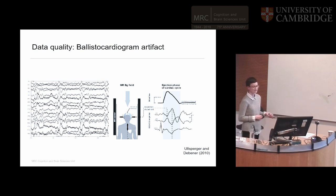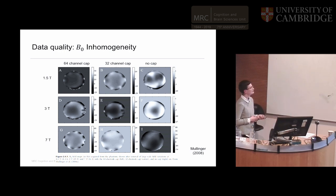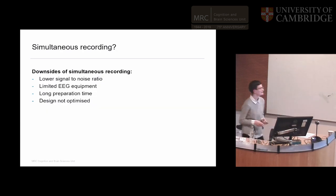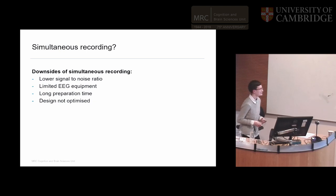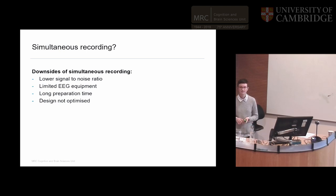It's not just the EEG that's affected — looking at the MR field at different strengths with and without a 64 or 32 channel cap, you can clearly see the presence of the electrodes in the MR field. The downsides of simultaneous recording include a lower signal-to-noise ratio, limited EEG equipment options — the highest density caps currently available are 64 channels — and passive rather than active electrodes, which means long setup times. It can also be difficult to optimize the experimental design when forcing EEG and fMRI into the same experiment.